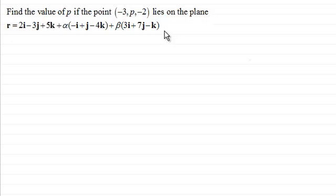And so what I've got here is an example which hopefully will demonstrate how to handle questions like this. We've got to find the value of p if the point (-3, p, -2) lies on the plane with equation r = 2i - 3j + 5k + α(-i + j - 4k) + β(3i + 7j - k).